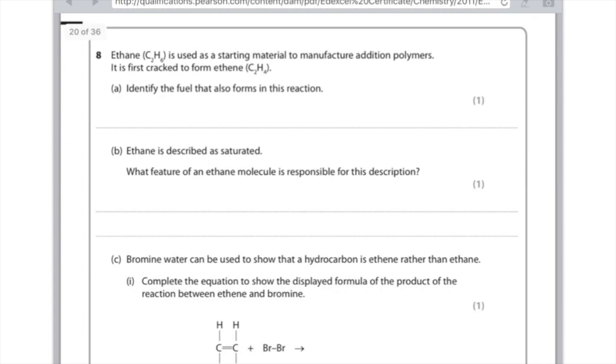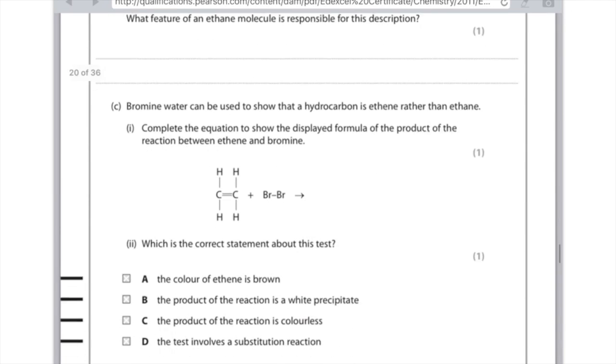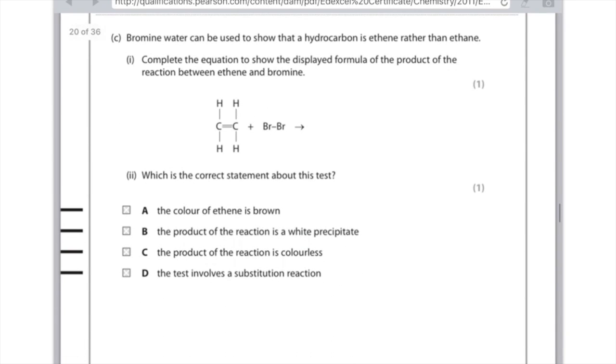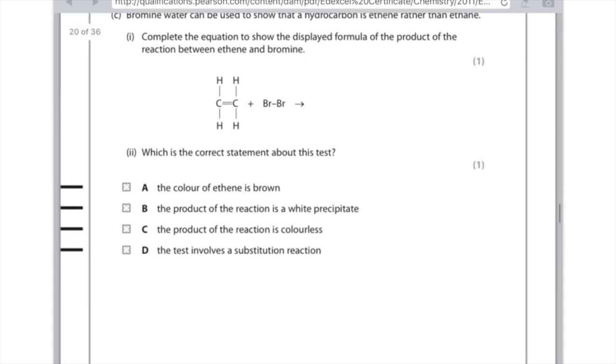Ethene is described as saturated. What feature of an ethene molecule is responsible for this description? And it's because, make sure you include the word only, only single bonds between the carbon atoms. Bromine water can be used to show that hydrocarbon is ethene rather than ethane. Complete the equation to show the displayed formula of the product of the reaction between ethene and bromine. Because it's an alkene being added to bromine, you're going to be undergoing an addition reaction. So the bromine is going to add itself. Let's break that double bond, add the bromines, and then include all the hydrogens that were already part of ethene.